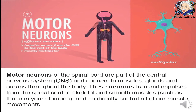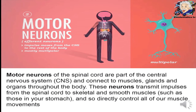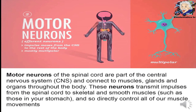The second type is motor neurons, also called efferent neurons. These transmit impulses from the CNS to the rest of the body, controlling all muscle movements by transmitting impulses from the spinal cord to skeletal and smooth muscles. The motor neurons of the spinal cord are part of the central nervous system and connect to muscles, glands, and organs throughout the body.